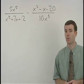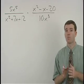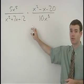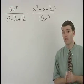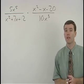Just like simplifying rational expressions, when multiplying two rational expressions together, always try to factor before you do any canceling.